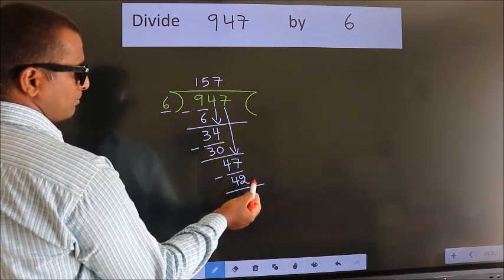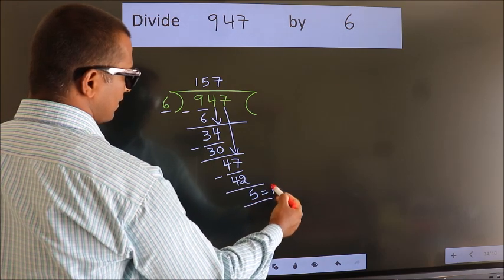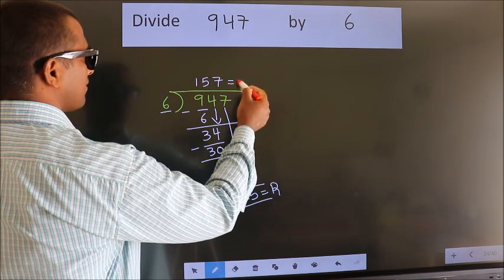No more numbers to bring down. So we stop here. This is our remainder. This is our quotient.